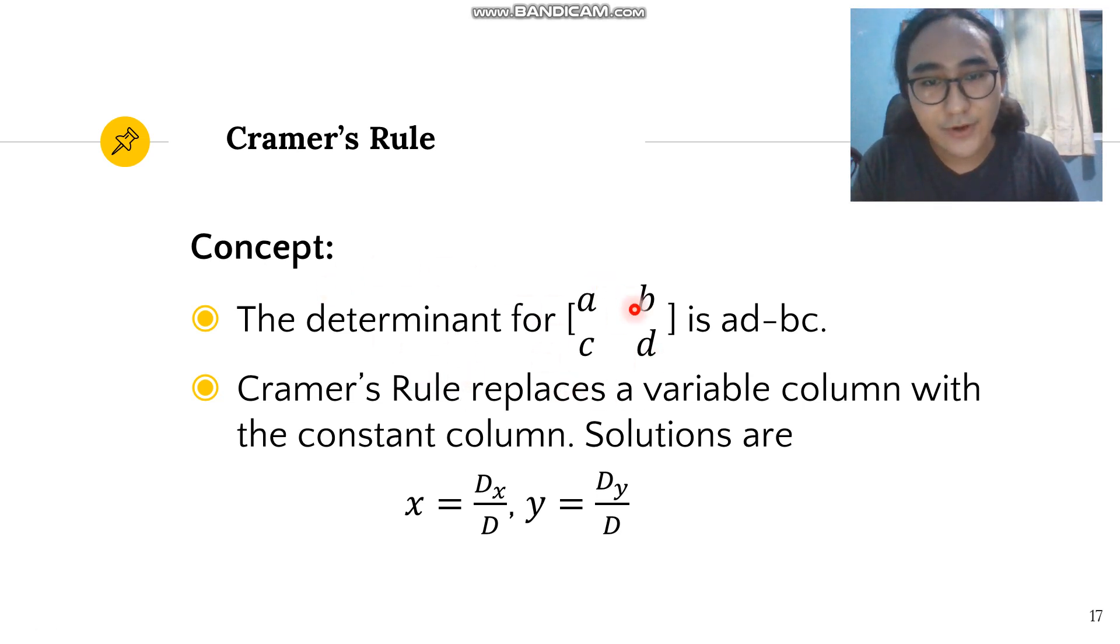The determinant for abcd, this is a matrix, is ab minus bc. The Cramer's rule will introduce this formula. We have x is equals to d sub x over d and y is equals to d sub y over d. So please remember that.